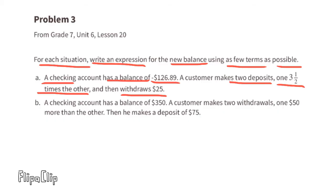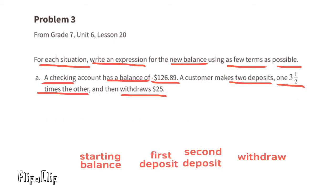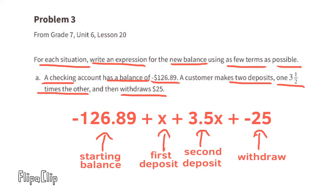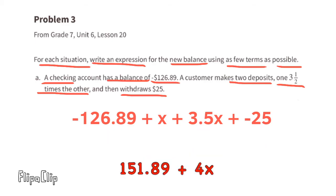The starting balance is negative $126.89. The first deposit is plus x. The second deposit is 3.5 times the first deposit, which can be written as 3.5x. And a withdrawal of $25, or negative 25. Combine the like terms, and you end up with negative 151.89 plus 4x.